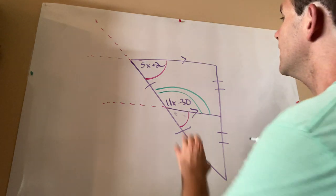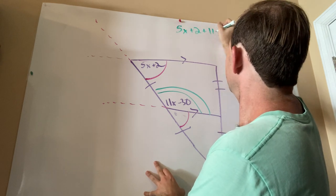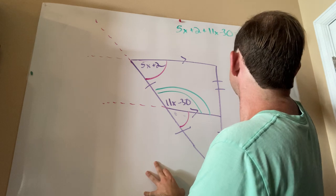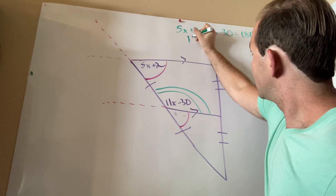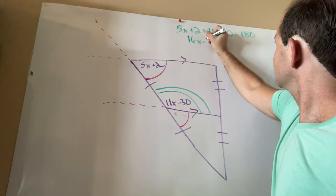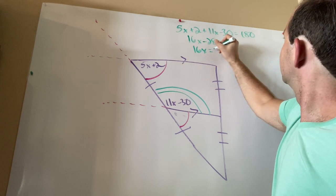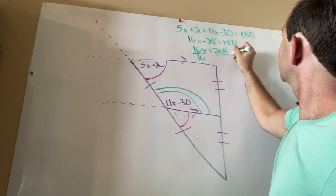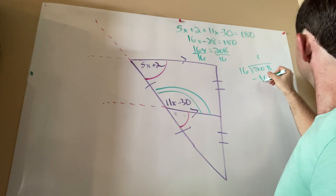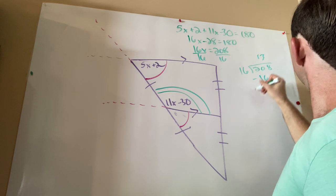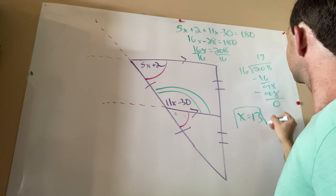Thus, for this particular problem, all I have to do is write an equation: 5x plus 2 plus 11x minus 30 equals 180 degrees. Combine my like terms. Add 28 to both sides. Divide both sides by 16. And let's take a look, can I do this division? It goes in once. 4, 8, 3. So in this particular case, x is 13.